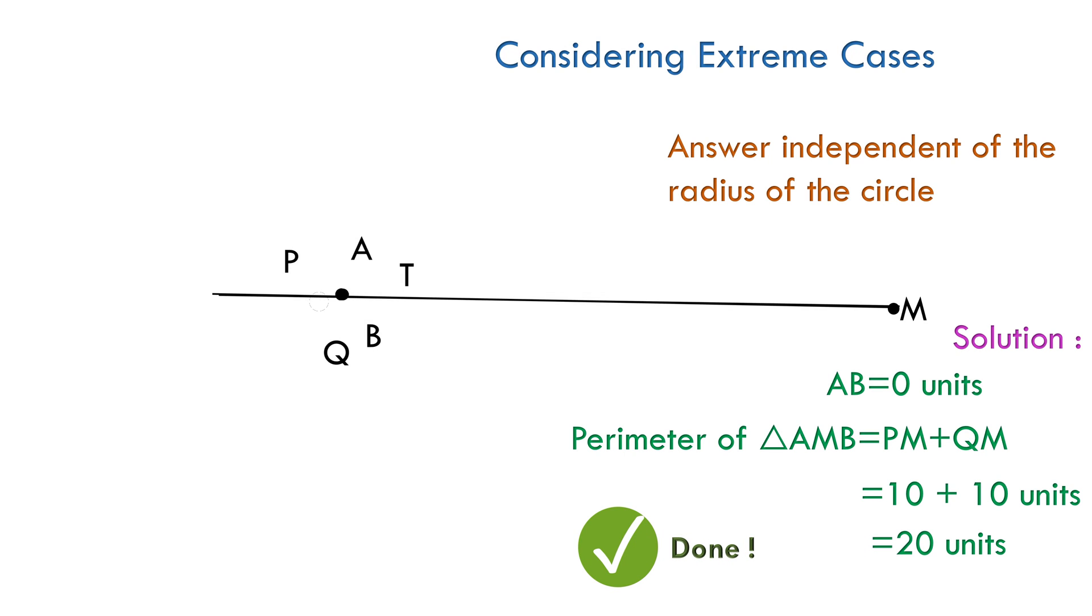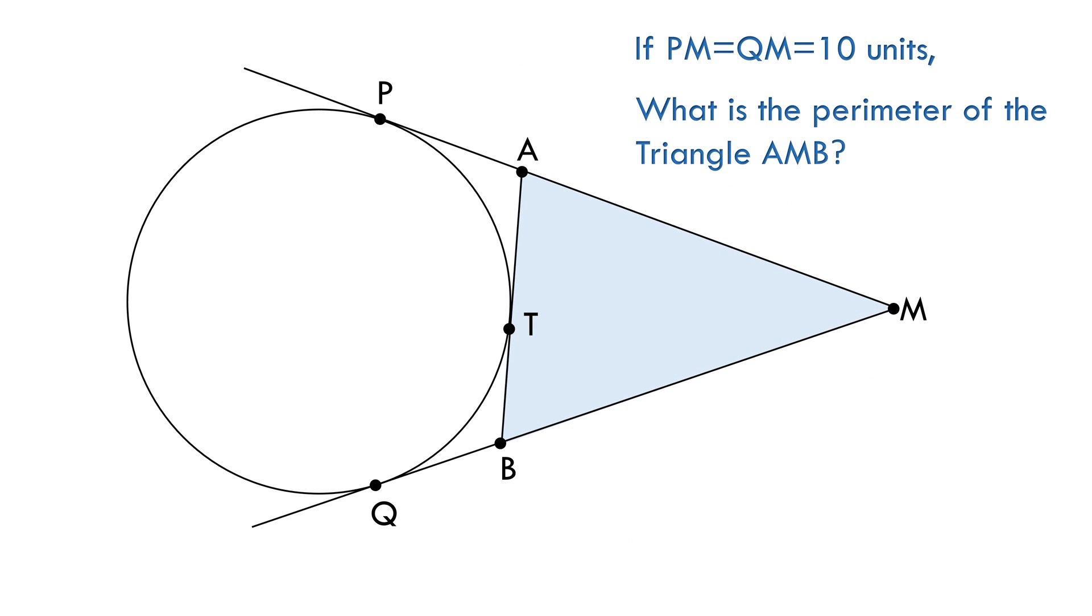We can also solve this problem our usual way. Here, the perimeter of the triangle AMB equals AM plus MB plus BT plus TA.